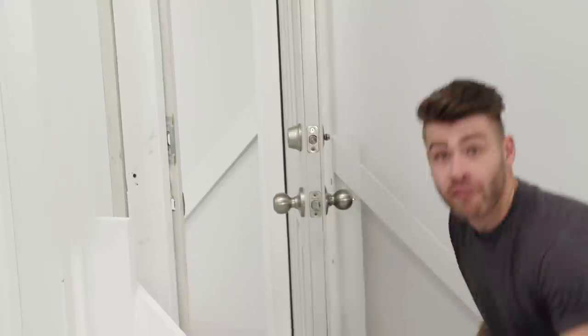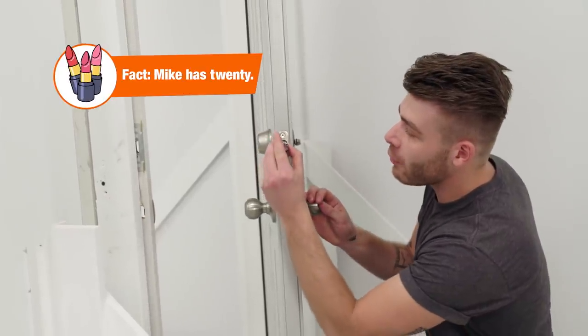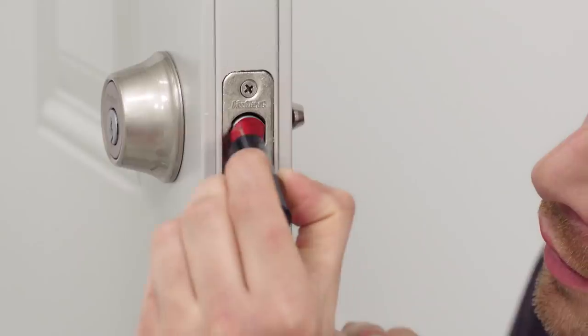If your deadbolt's making contact with your strike plate, you can use the old lipstick and file trick to fix it. And here's how. First you want to get your lipstick. Now this is a tool everyone should have in their tool kit. We're just going to use it to paint onto the end of the deadbolt, making sure to get good coverage.